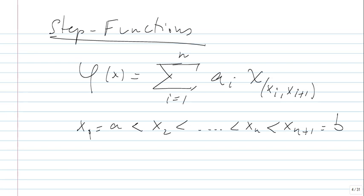So a step function takes finite values, and those values are taken over intervals — disjoint intervals whose union forms your interval [a,b], up to the endpoints xᵢ. Now, for a simple function, as we said before...